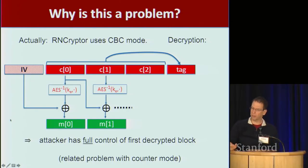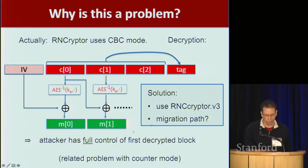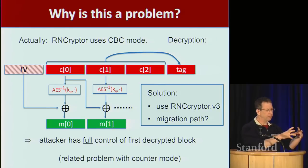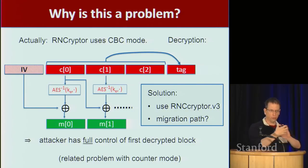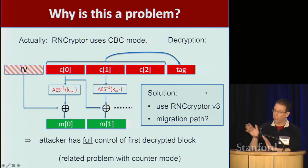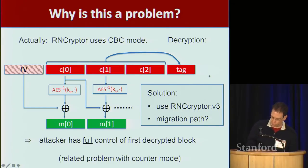There are similar problems with counter mode. So that's a classic mistake in implementing encrypt-then-MAC: you still have to know that everything needs to be MACed. This has been fixed in REncryptor V3, which does the right thing. But the problem with crypto is that once it's deployed, there's a very difficult migration path — everything that's already encrypted, you can't decrypt it unless you have the decryption key. So if you want to move to a new encryption algorithm, you have to wait for someone to give you the decryption key so you can re-encrypt. Migration is always difficult with crypto. You want to get your crypto right the first time.